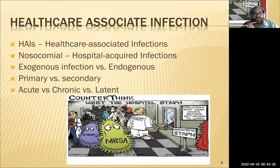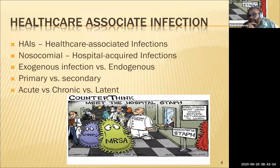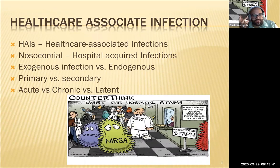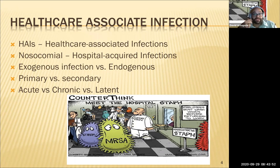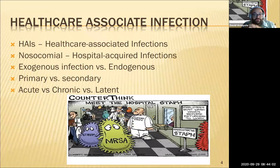Acute versus chronic versus latent infections: acute would be like suddenly having a cold or ear infection. Chronic lasts weeks, months, or years — things like Crohn's, abscesses, or specific pain conditions. Latent is long-term without signs and symptoms — think tuberculosis, where people need to get tested because they don't have symptoms but may have been exposed and the bacteria is setting up in their lungs, waiting for some sort of immunocompromisation to occur.